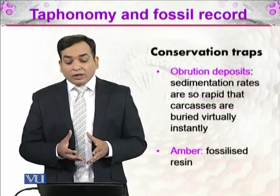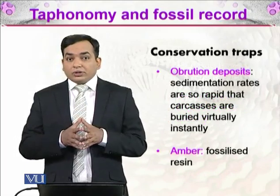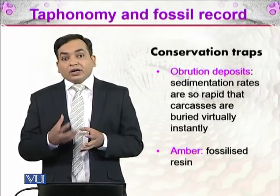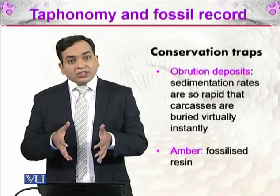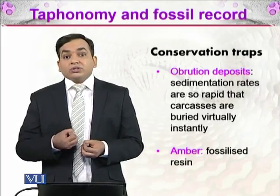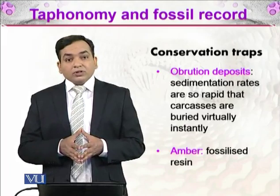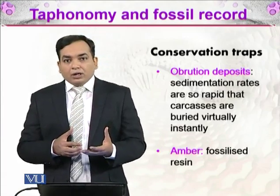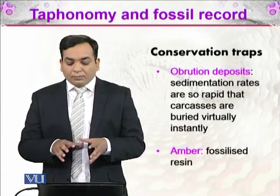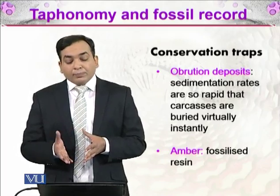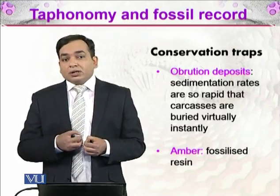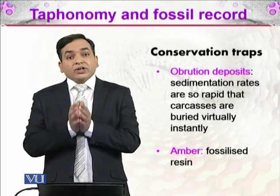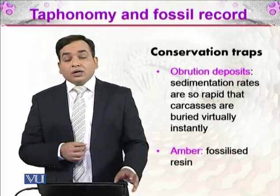There are also conservation traps — environments that have a higher ability to form fossils. They can trap organisms and produce excellently preserved fossils. For example, alluvial deposits: an organism dies and is immediately buried, which aids preservation. Then there is amber, which is fossilized resin. Resin is the material that comes off trees, and some insects become trapped in it. That fossilized resin is called amber, and we can see excellent insect specimens preserved in amber today.